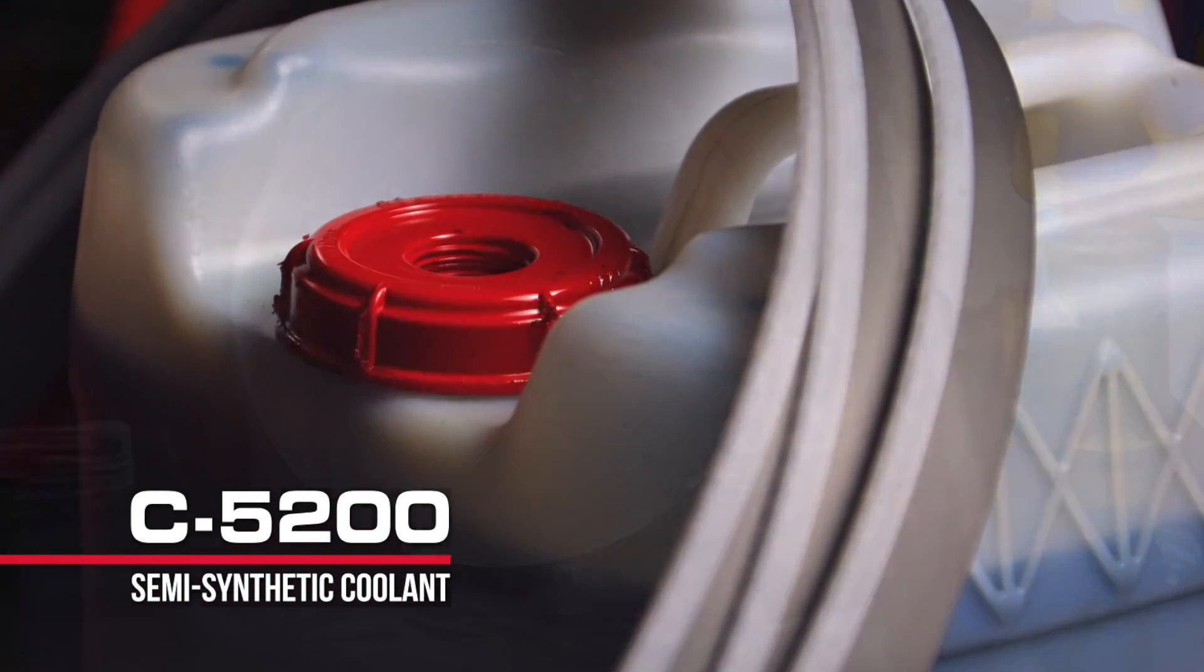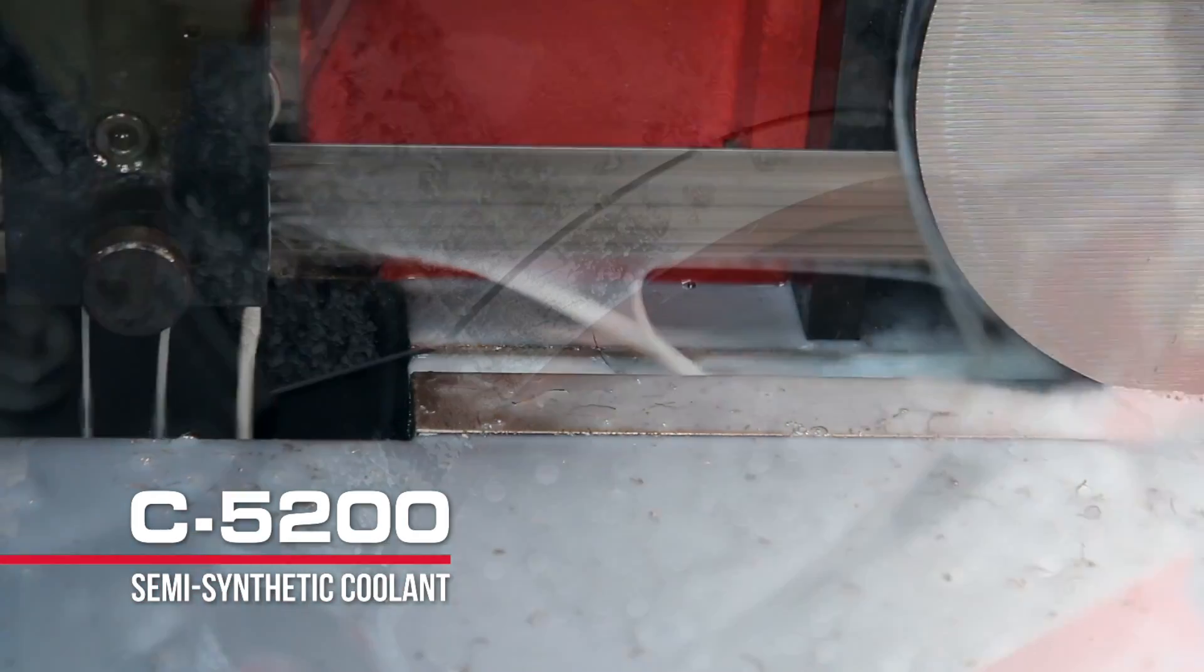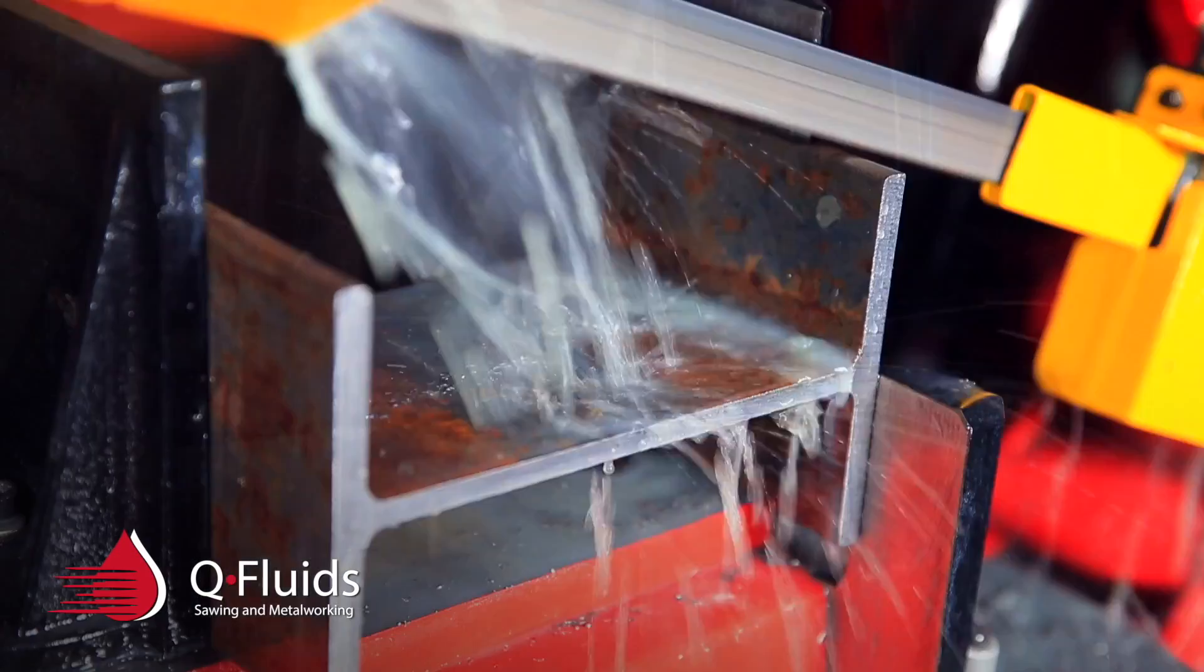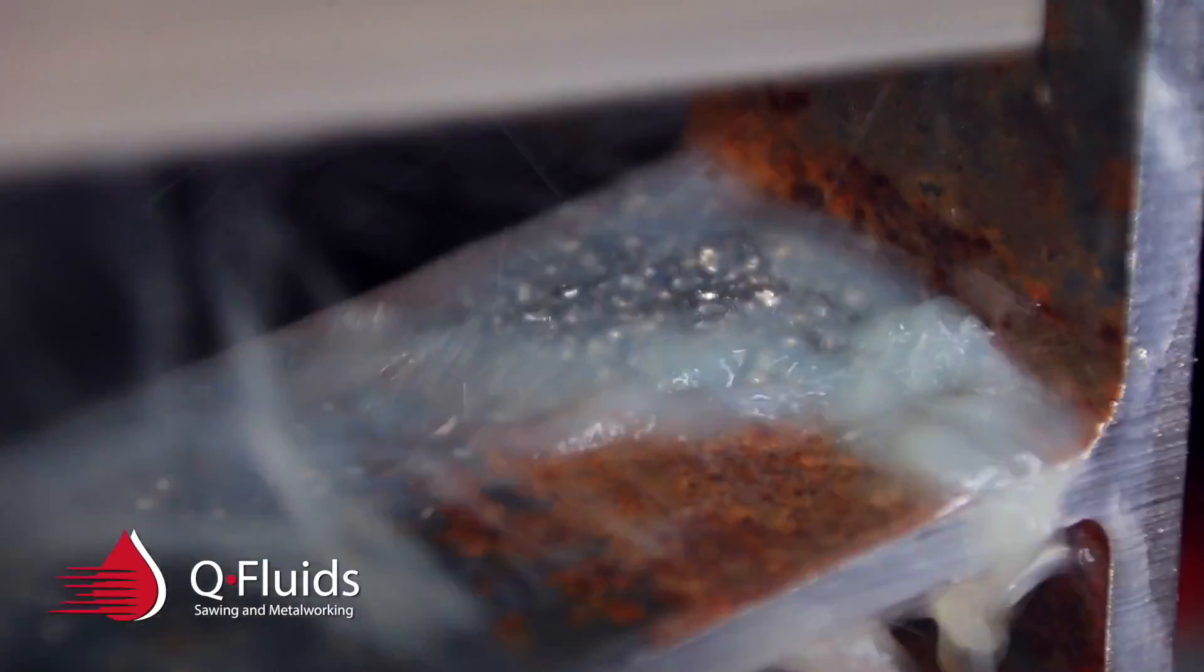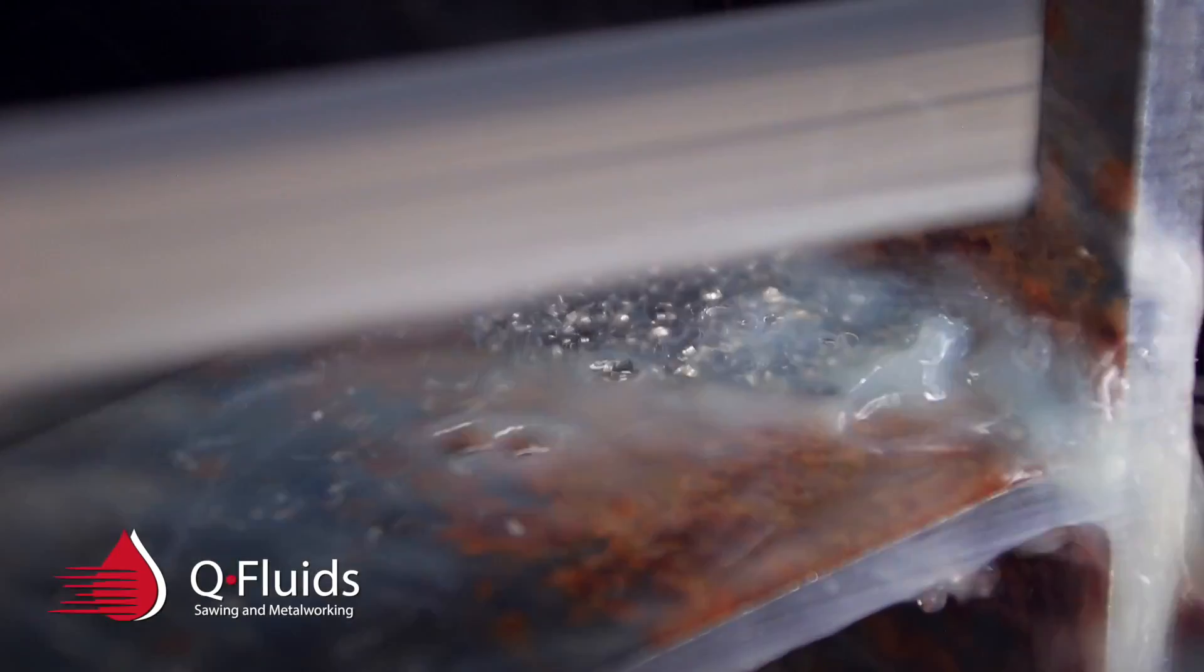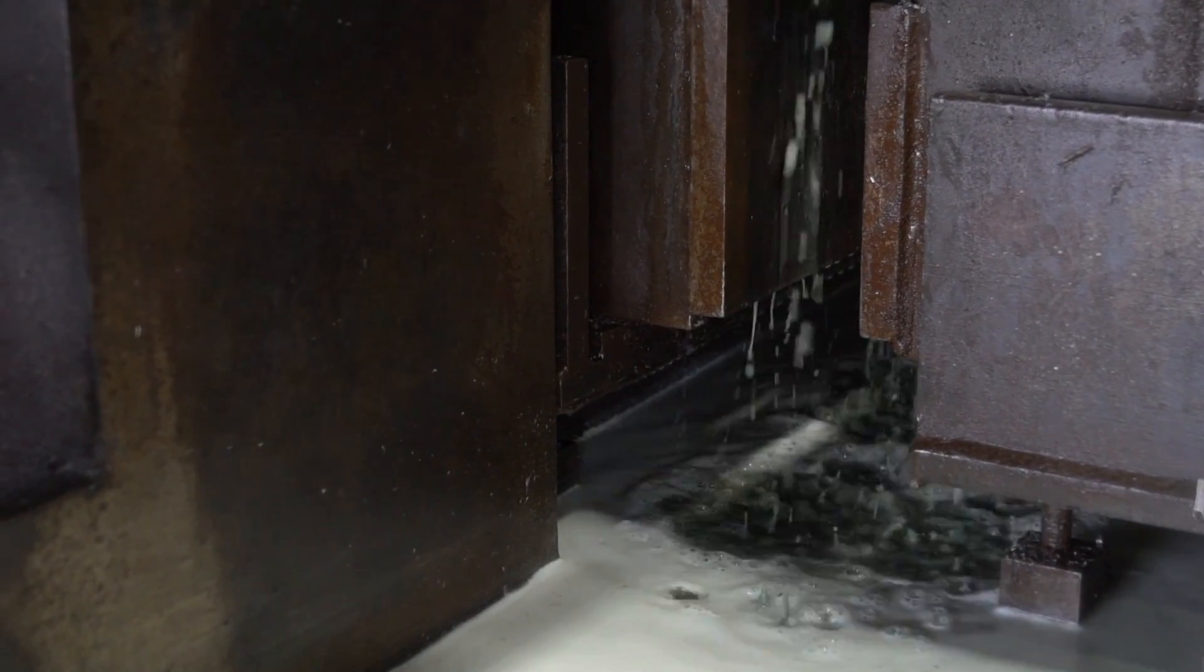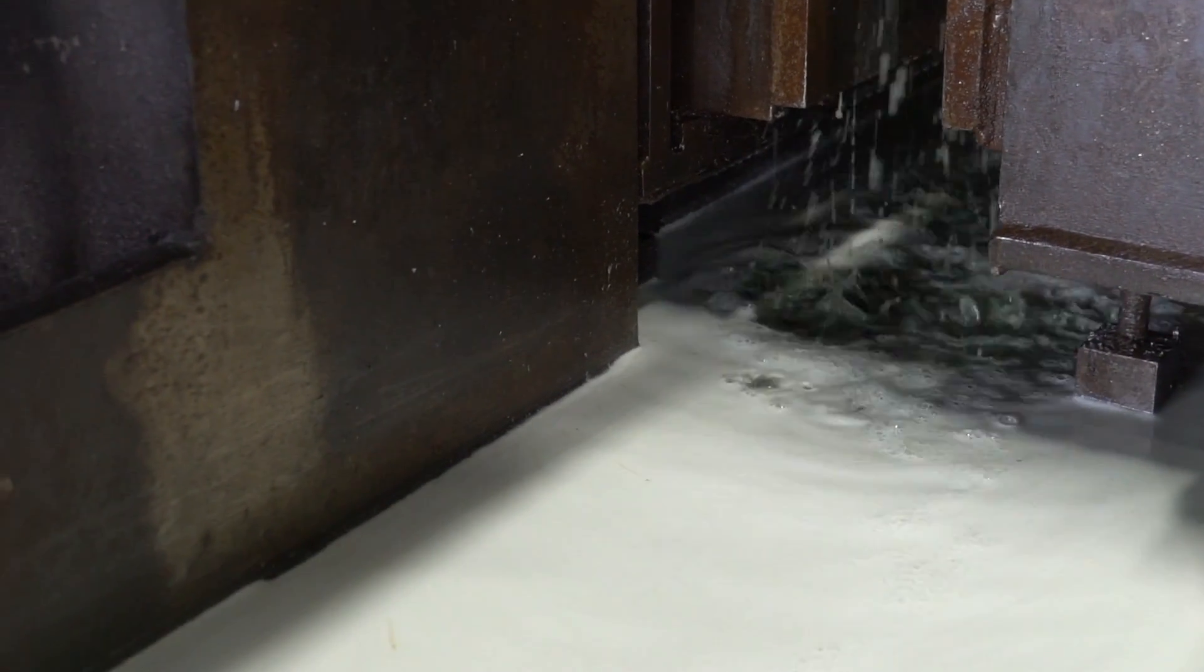The Q5200 is a good general-purpose all-around workhorse of a coolant. It can be used in sawing and grinding 10 to 1, 20 to 1, and it has a good detergent package. It's got good lubricators and can withstand industrial use such as this, and so it's going to keep the part as well as the machine chip-free and debris-free through the cutting process.